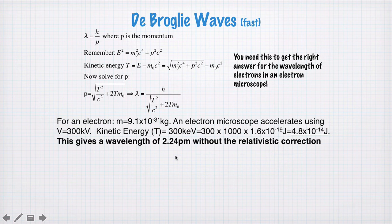Subbing that into our equation, we get a wavelength of about 2.24 picometers without the relativistic correction, or 1.97 picometers with the correction. So you can see it makes a bit of a difference here. And the higher your acceleration voltage, the larger this difference will become.